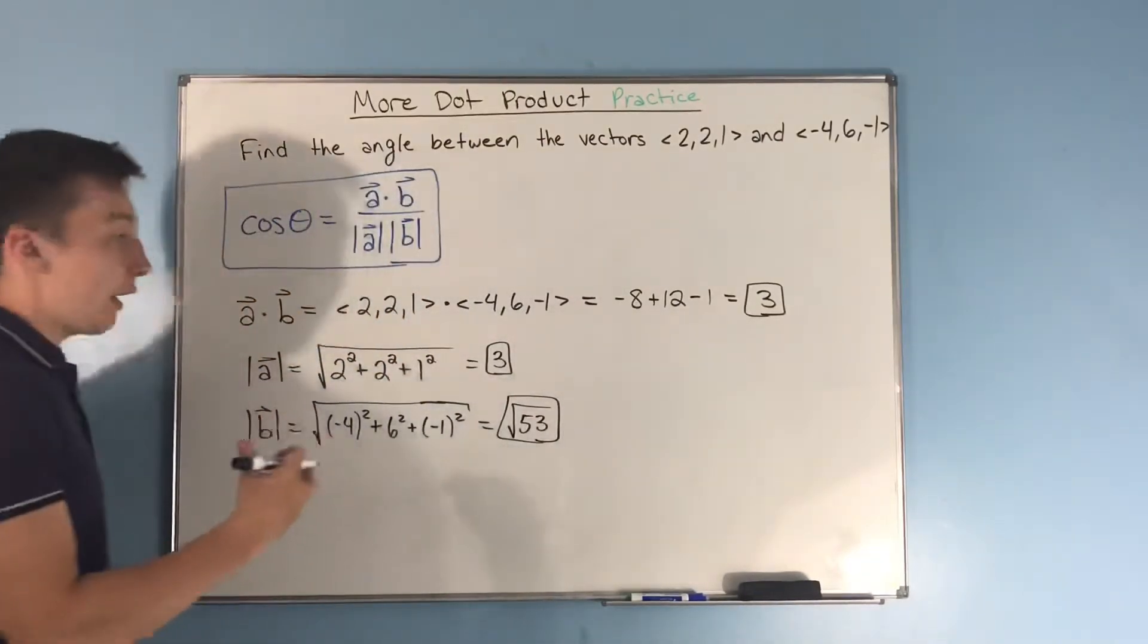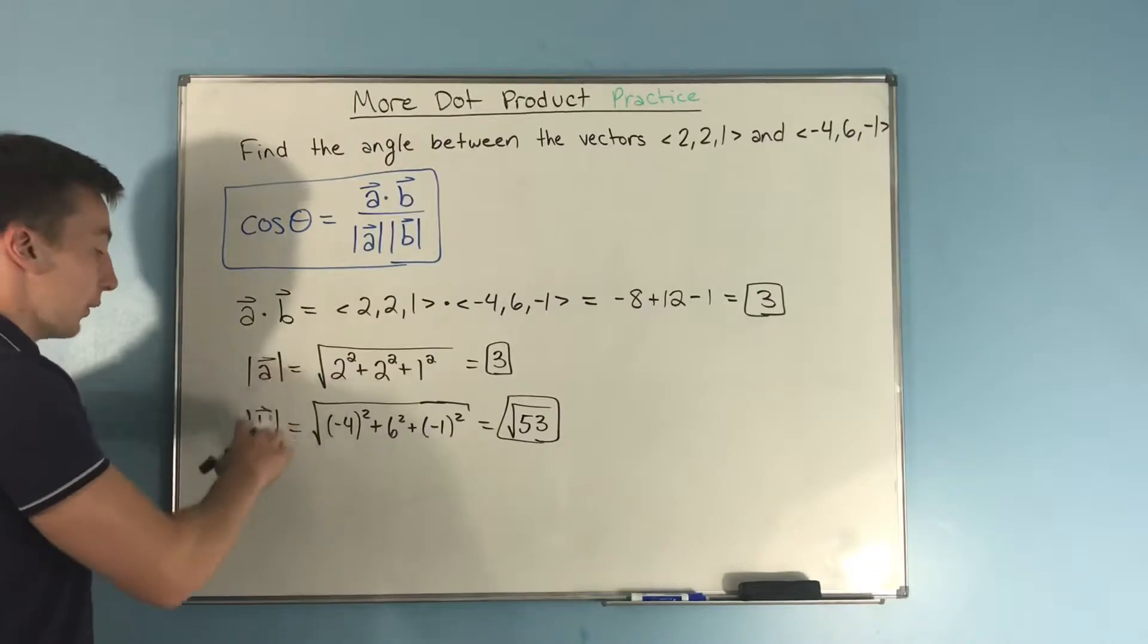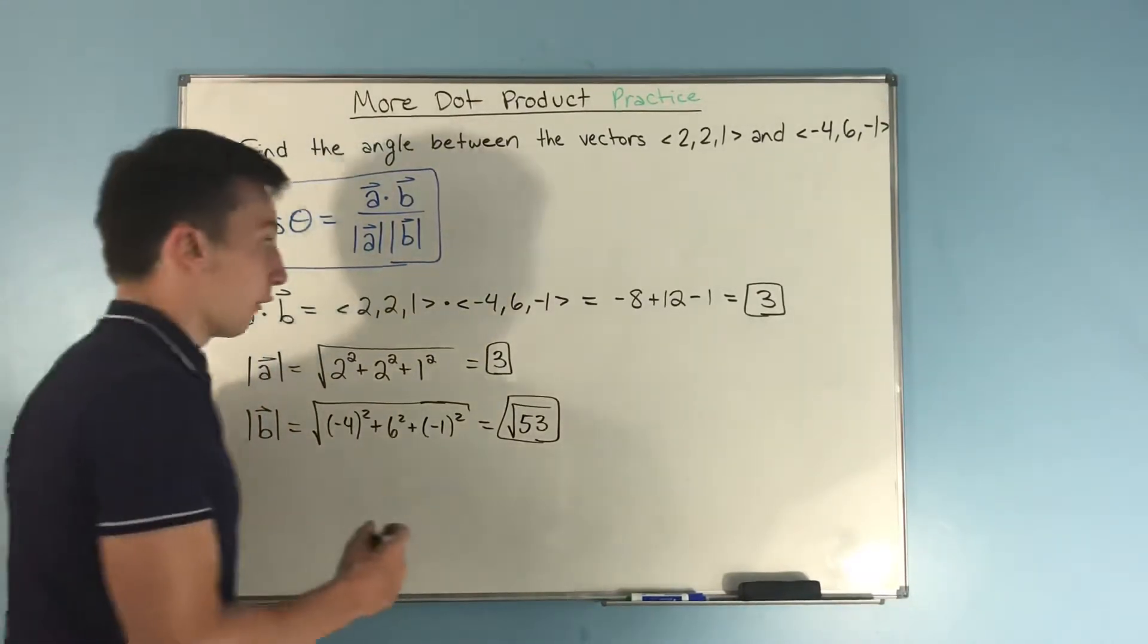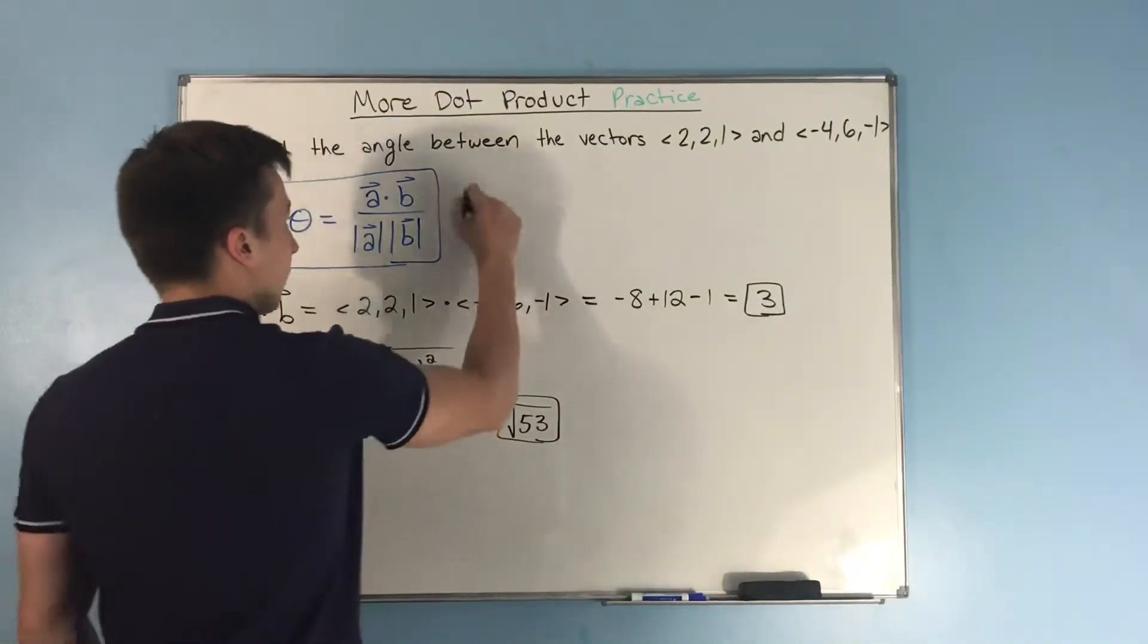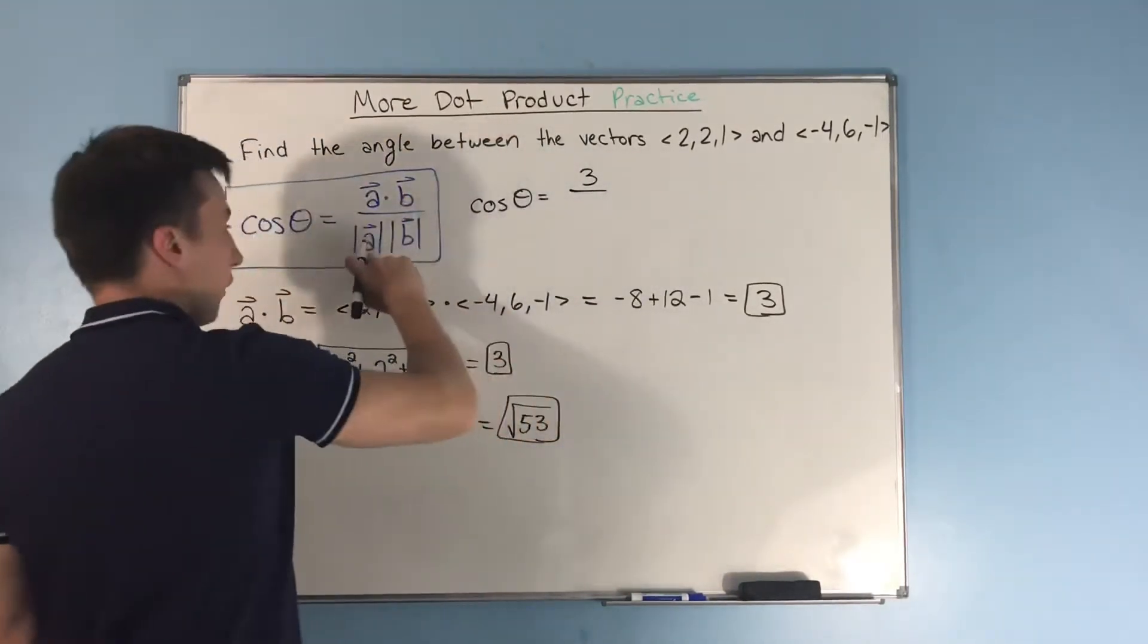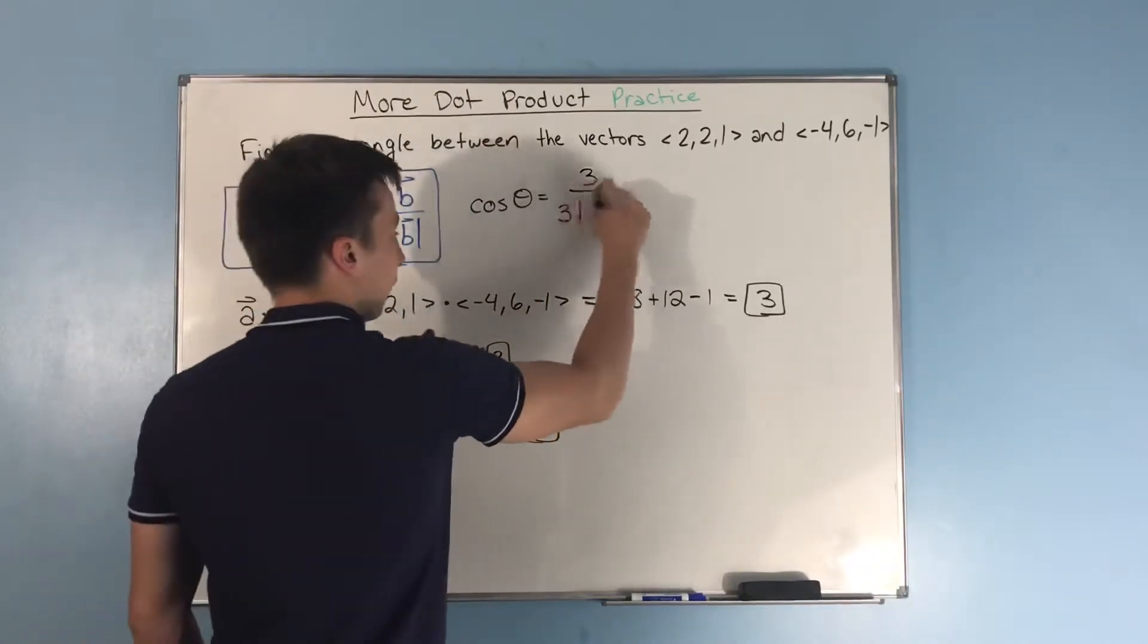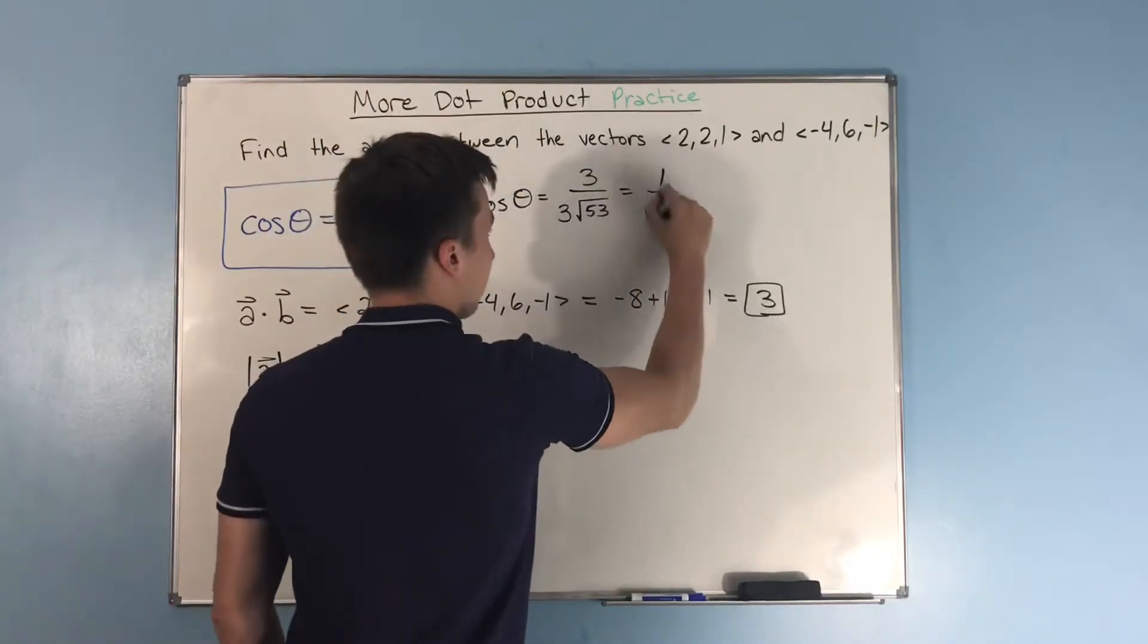So now we found everything that we need. We have a dot b, we have the magnitude of a, we have the magnitude of b, and all we have to do now is plug it into our formula. So plugging in here, we get that the cosine of theta is equal to a dot b, that's 3, over 3, that's the magnitude of a, times rad 53.